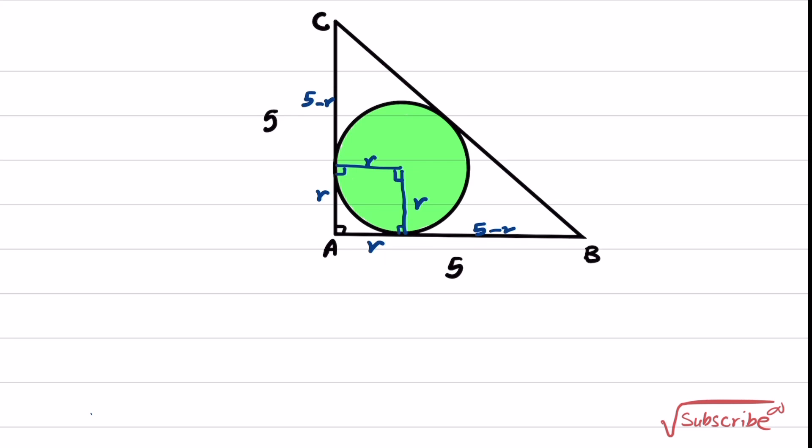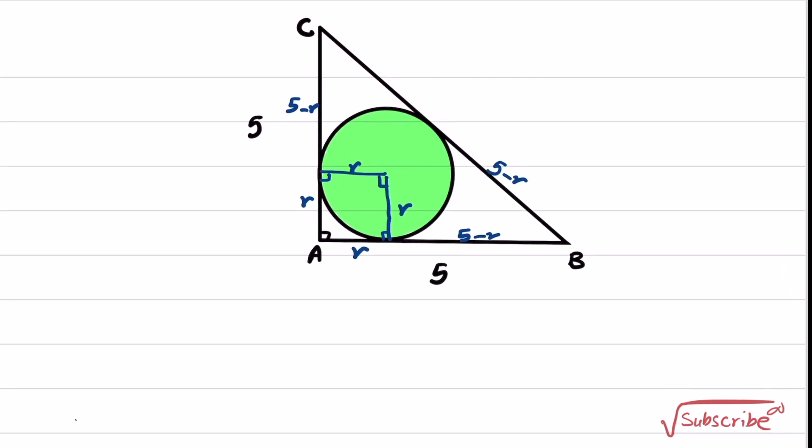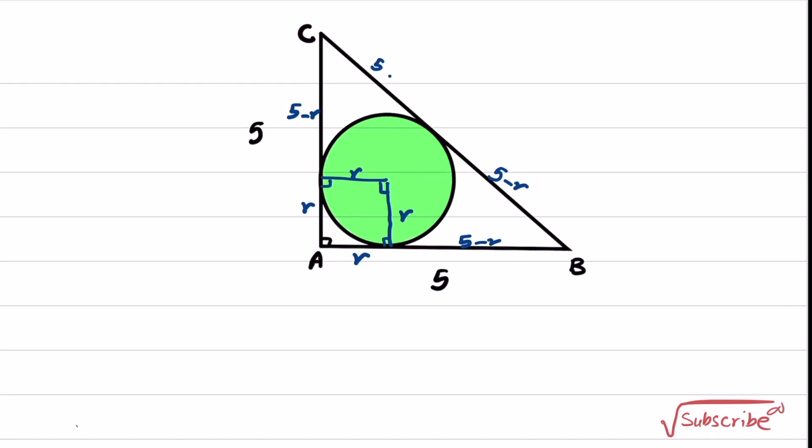Another point that we want to use is again related to in-circle. If from one point you draw two tangents to this circle, the lengths of these two tangents are equal. So whatever this is, the other side is equal to that. The same thing applies here. If you plot these two tangents, the lengths of them are equal. So this part is equal to 5 minus r. This part is also equal to 5 minus r.